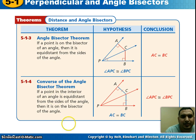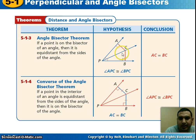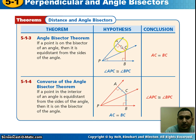The first one is the Angle Bisector Theorem: if a point is on the bisector of an angle, then it is equidistant from the sides of the angle. Looking at the hypothesis, you notice that angle APC is congruent to angle BPC. So if you have a picture like this and notice those two angles are congruent, then ray PC is an angle bisector. If you pick any point on this ray, like point C, the distance from C to A is going to equal the distance from C to B. It's important that those are perpendicular — 90 degrees at both A and B.